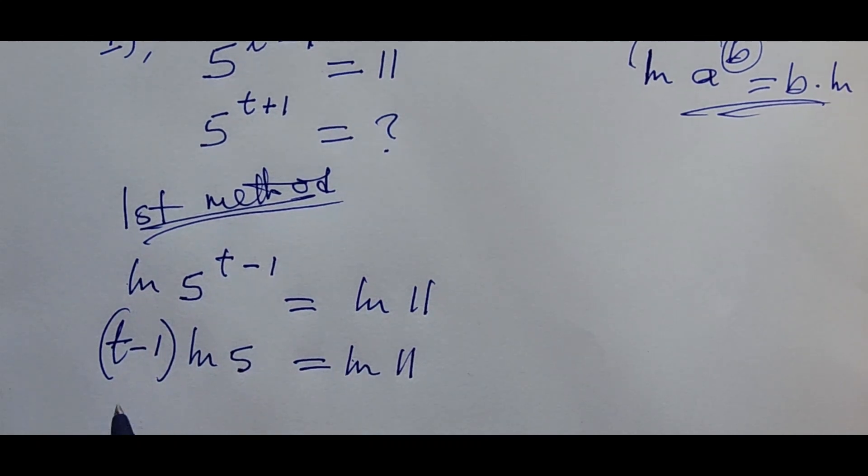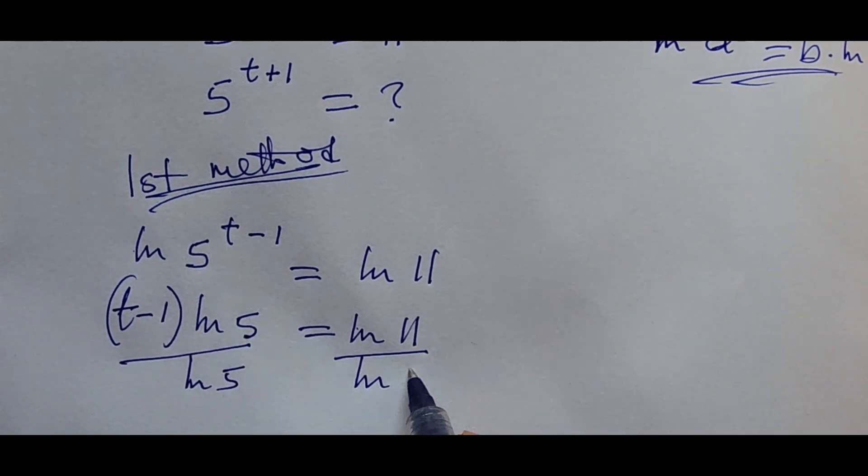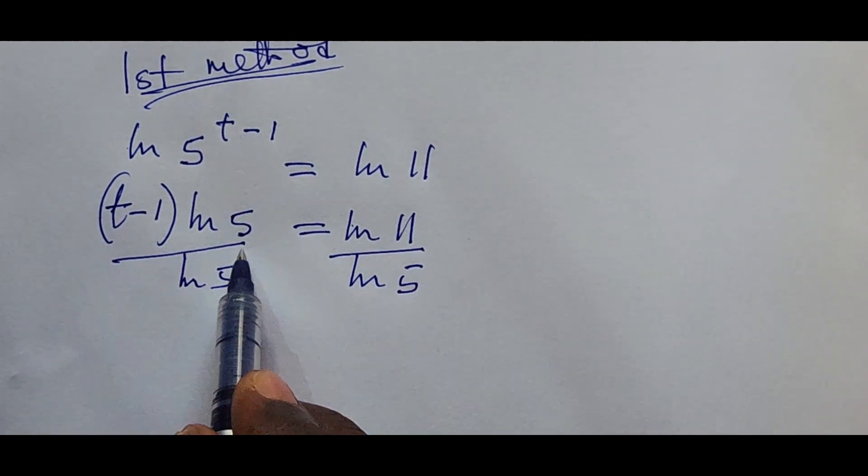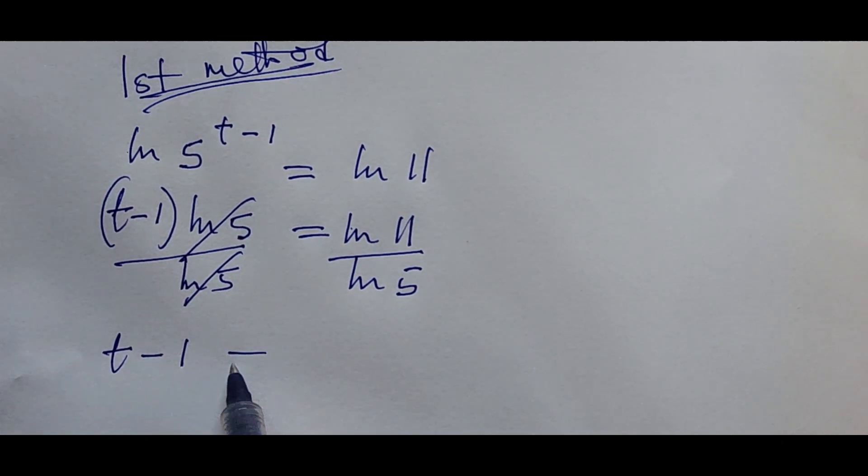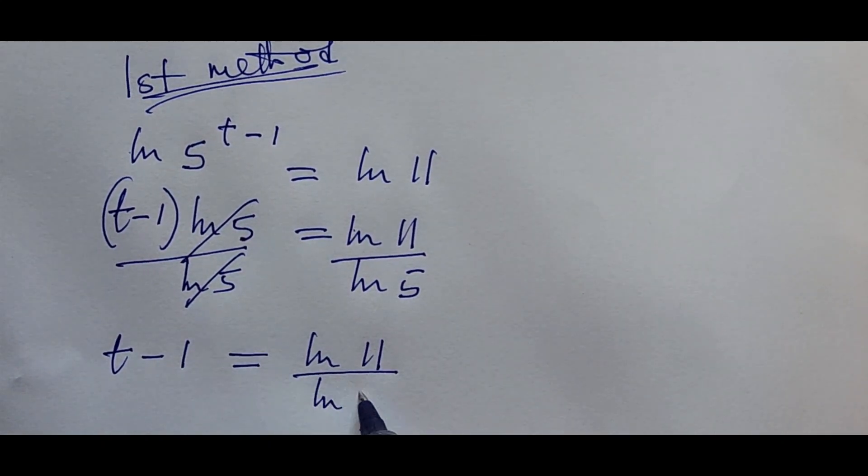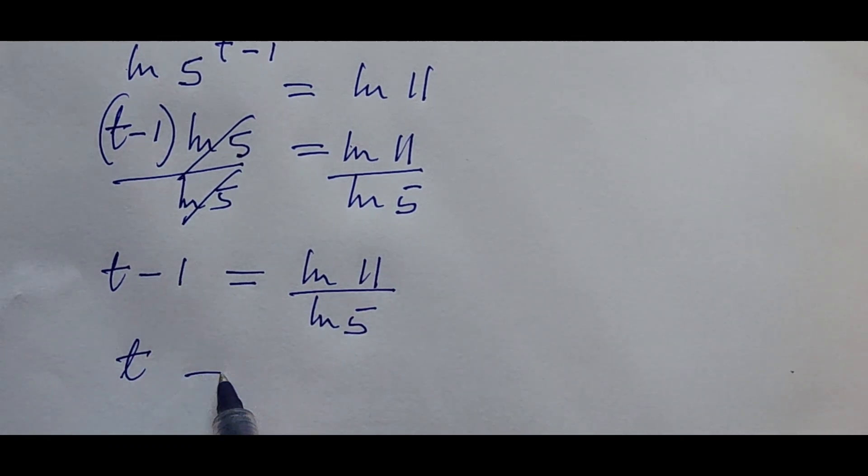So from here we divide both sides by the ln of 5. This will leave us with t minus 1 is equal to the ln of 11 all over the ln of 5. So we move this one to this side because we are looking for t.